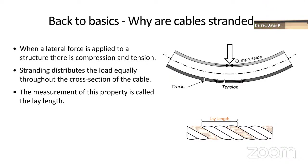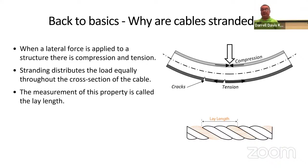Why are cables stranded? If you put a lateral force on a structure, there's going to be compression on one side and tension on the other. We want to distribute that load equally among all members of the cable, which is why it's stranded — same reason a rope is stranded. If you didn't strand it, the outer elements would break first and the whole thing would slowly degrade. The property governing this is called lay length — it's a specification related to how we rotate the bobbins around the center strength member.